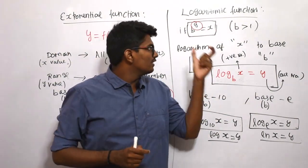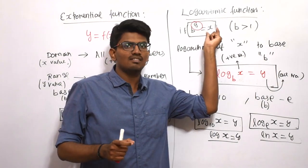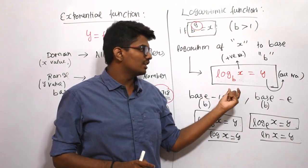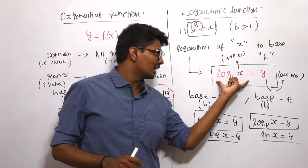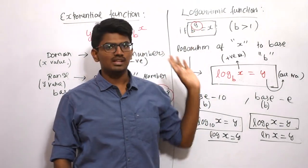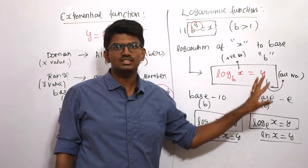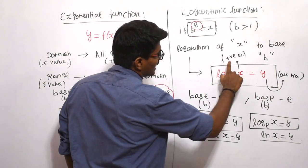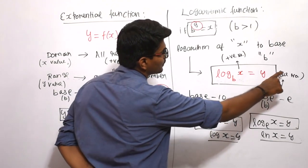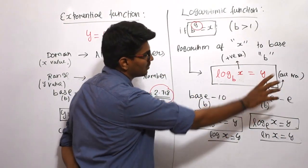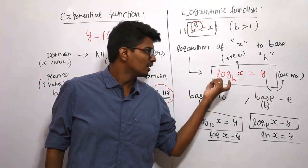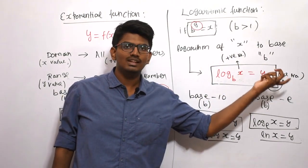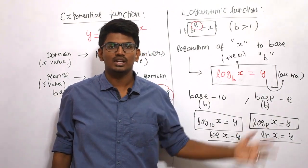Simply, if I want to find the logarithm of some particular value x, I need to find log base b of x. The base value remains b, and that logarithm value is nothing but the power of that base. The power of the base is y. Now, what values can y and x take? The x value can have all positive numbers and the y value can have all numbers — which means x should not be negative. Logarithm of a negative value cannot be found, so x is always positive and y can be both positive and negative.